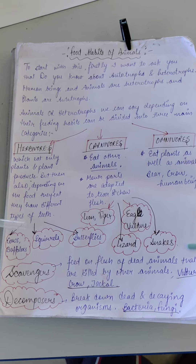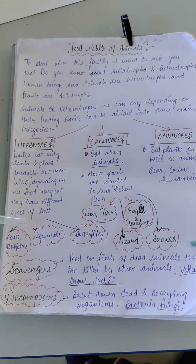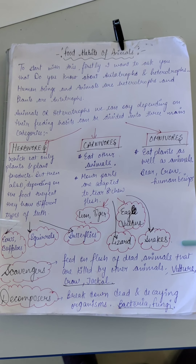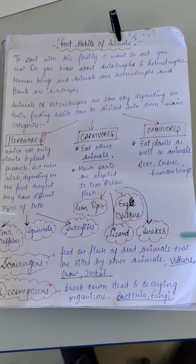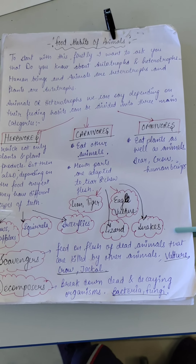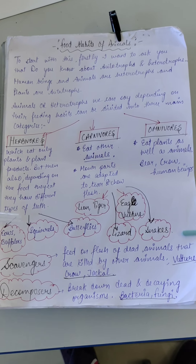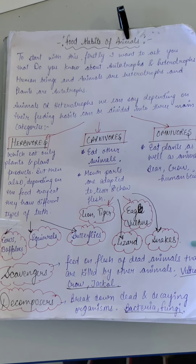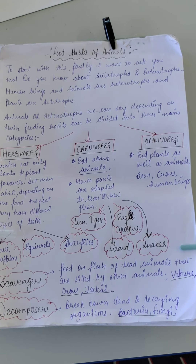Is this concept clear? As we are all heterotrophs, but are we all the same? Do we eat the same as a dog eats, or the same as a cow eats? No. So there is a difference between the feeding habits of a cow, a crow, a bird, and human beings. Depending on what we eat, there are three main categories: herbivores, carnivores, and omnivores.